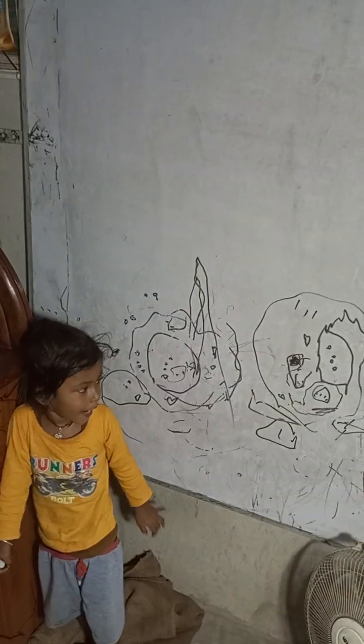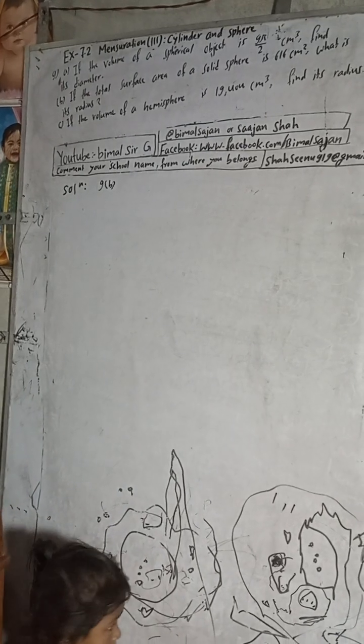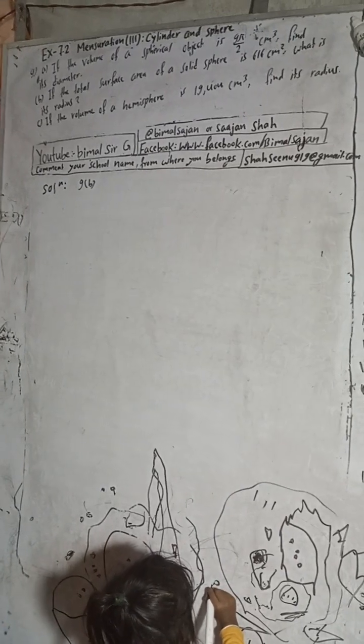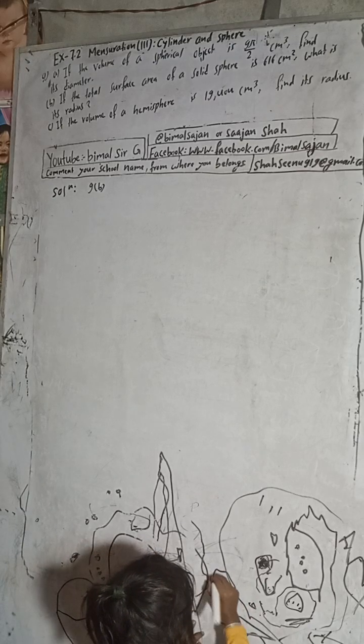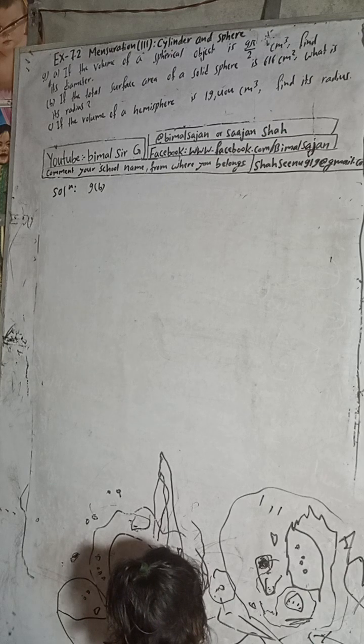Hi Class 9 and 10 students, welcome back to Vimal Sarji YouTube channel. This is question number 9B, Exercise 7.2, Mensuration third part - Cylinder and Sphere, Vedanta Excel Mathematics Class 9. In my YouTube channel, check the playlist.